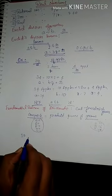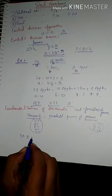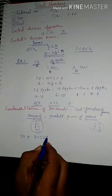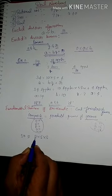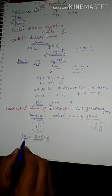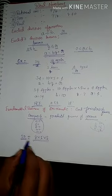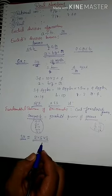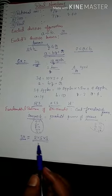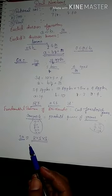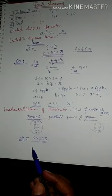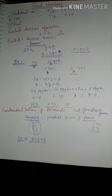Let us take one example: 30 is expressed as 2 × 5 × 3. Here 2, 5, and 3 are prime numbers, and 30 is a composite number. So 30 is expressed as the product of its prime factors. Every composite number can be expressed as a product of primes, and this factorization is unique, apart from the order in which the factors occur.